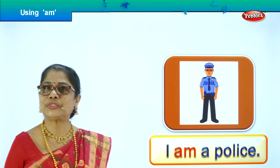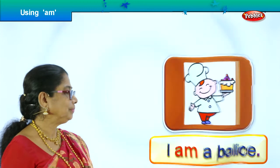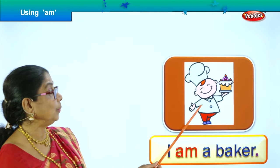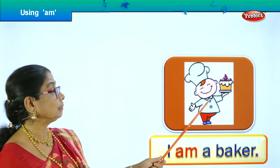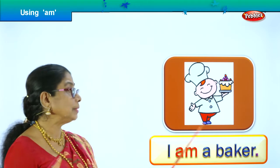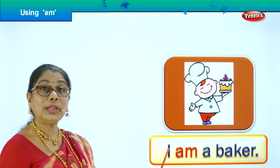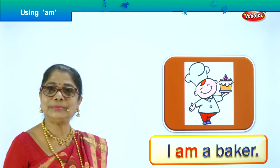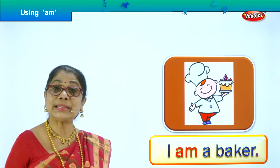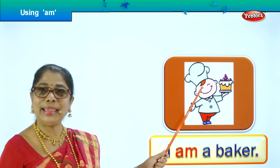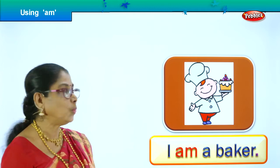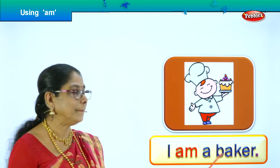You have learned to read a lot of sentences using 'I am' in the sentence. Here we are — look, he's got a lovely cake in his hand. If you ask him 'Sir, who are you?', he will say: 'I am a baker.' What do you get at the bakery? He bakes cakes, biscuits, buns, and bread. 'I am a baker.'